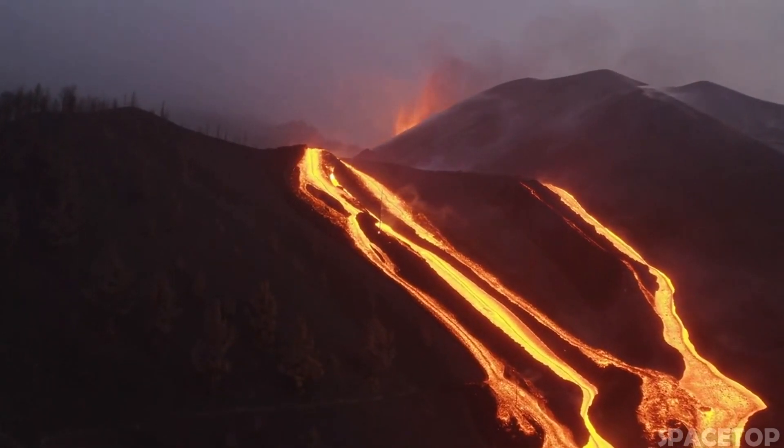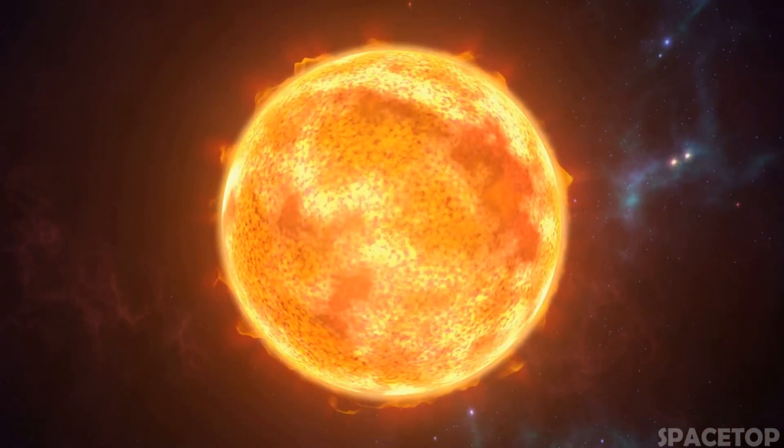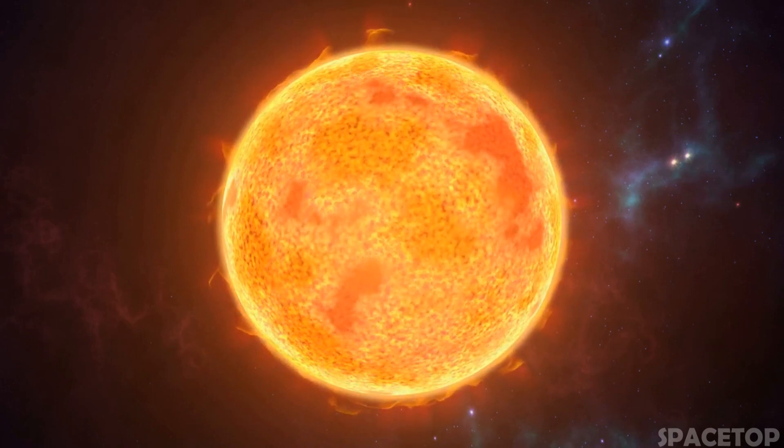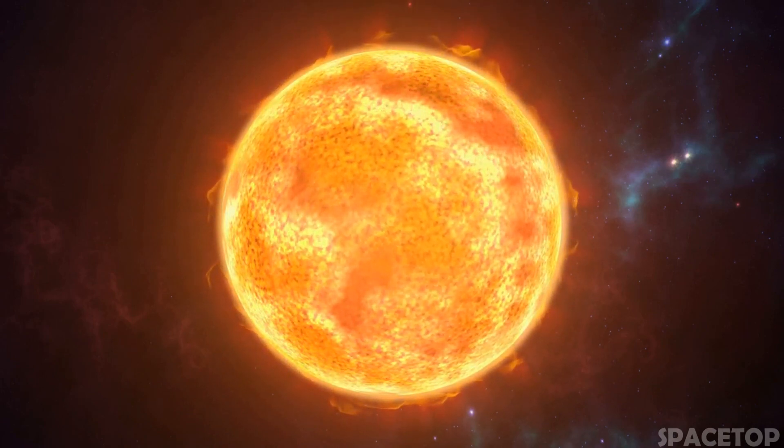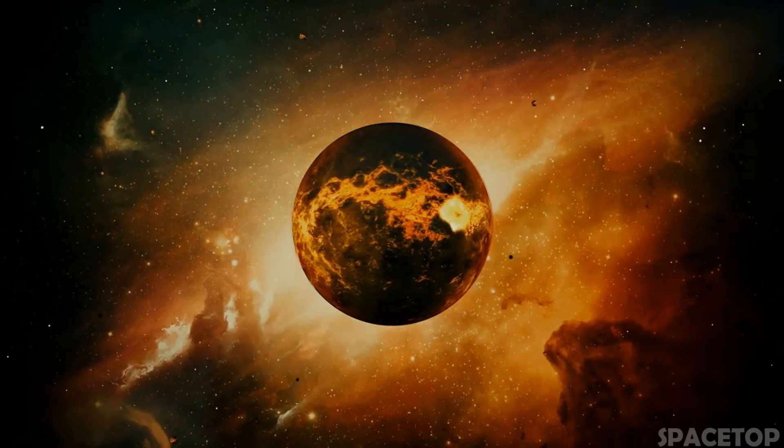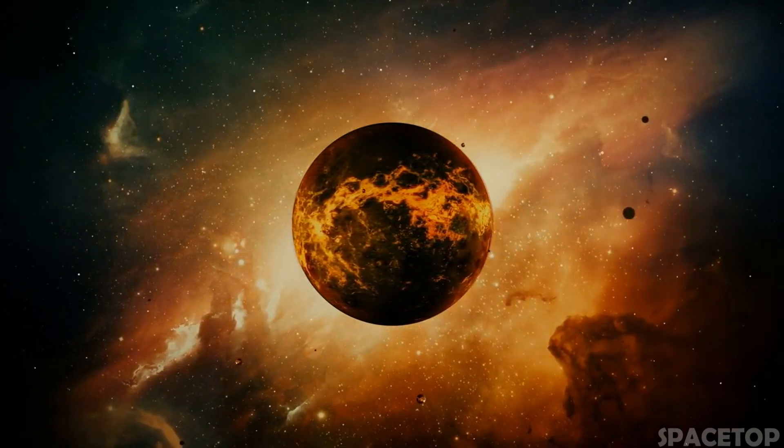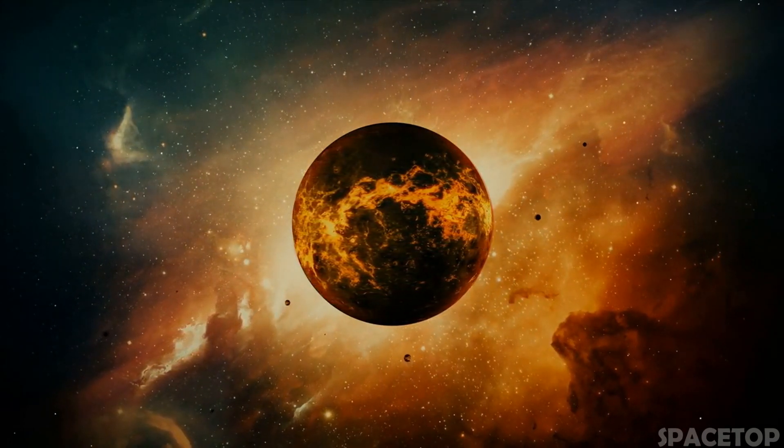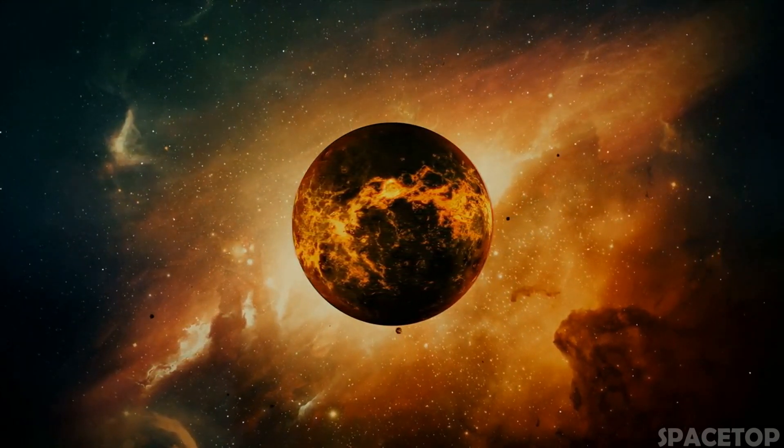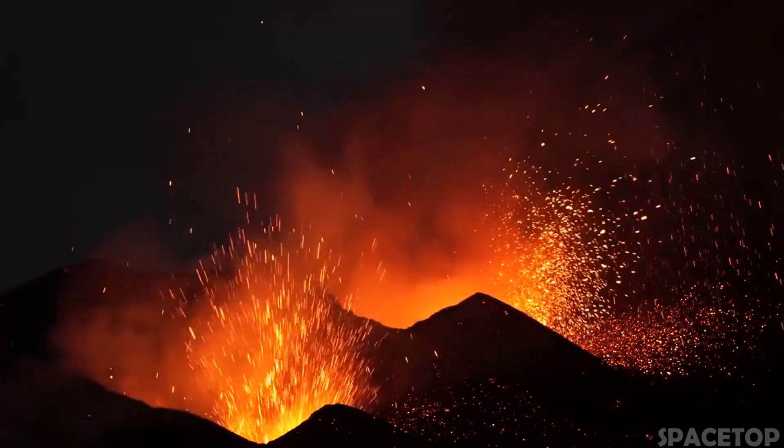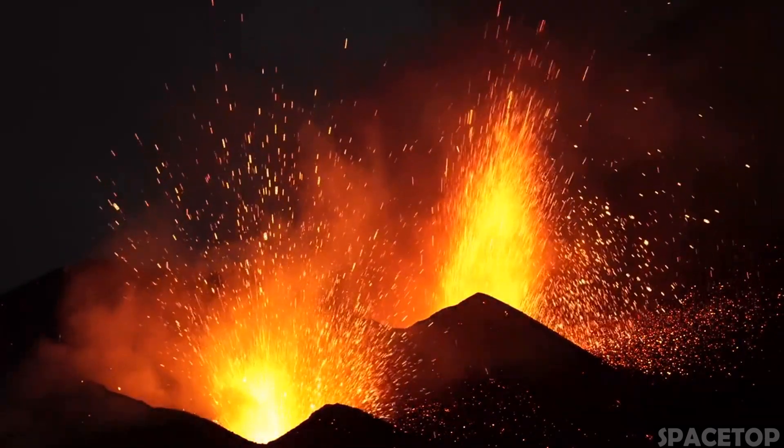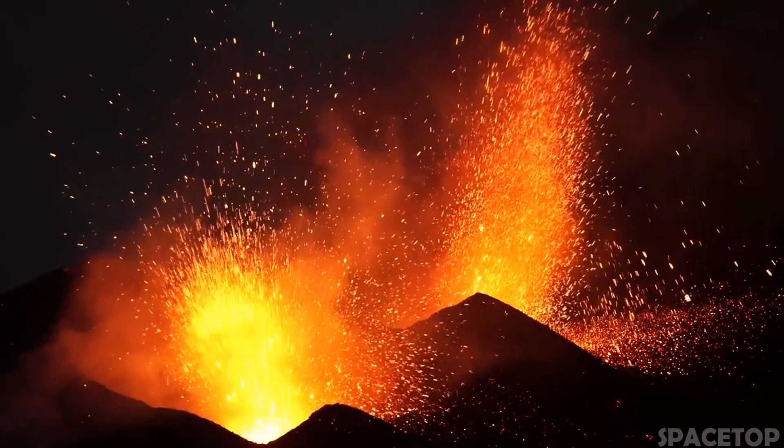So, how hot is it here? Because Kepler-70b is 65 times closer to its star than Mercury is to the Sun, the temperature on this exoplanet reaches a staggering 7,000 degrees Celsius. For comparison, the surface temperature of our Sun is only about 5,500 degrees Celsius. So, if hell exists, then it must be him.